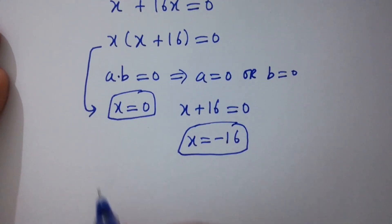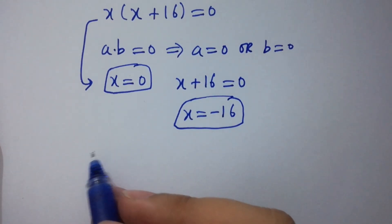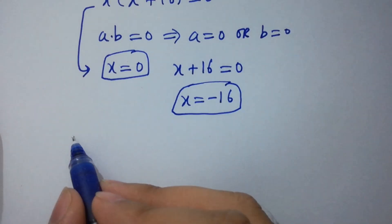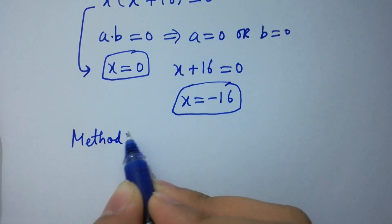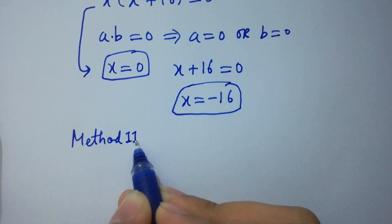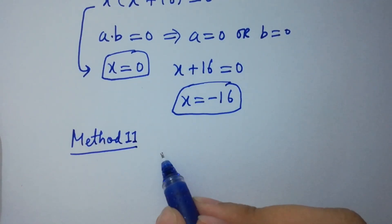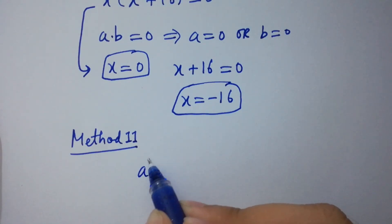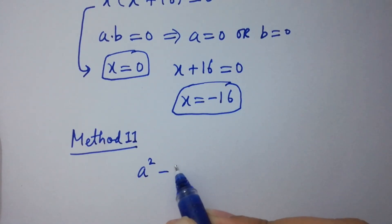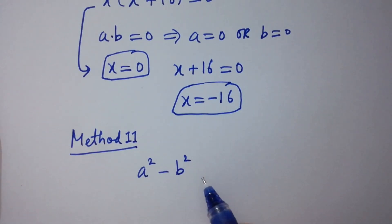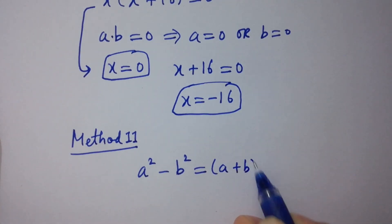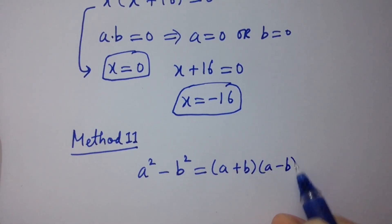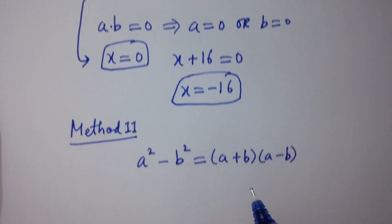Now I am going to solve this question by Method 2. Method 2 uses the formula a square minus b square equals (a + b)(a − b). We have the question here.